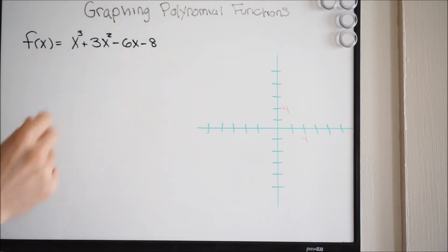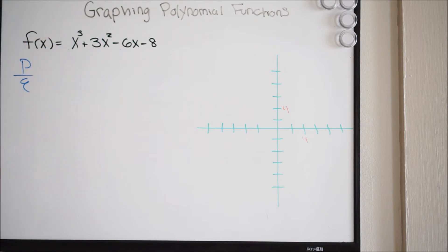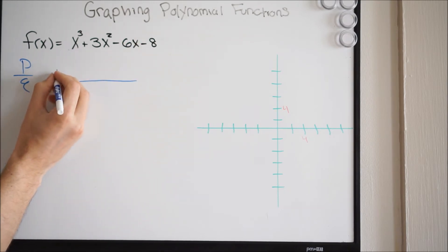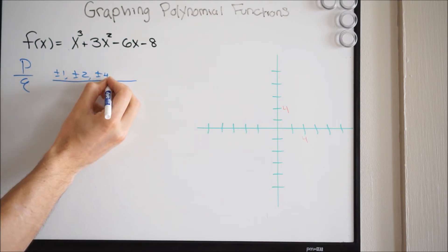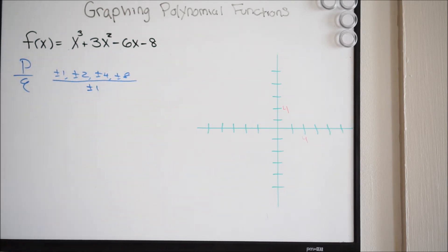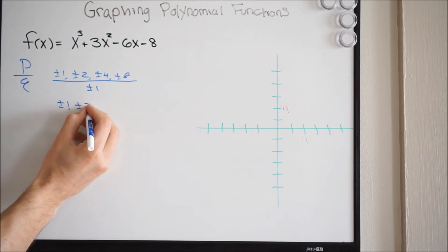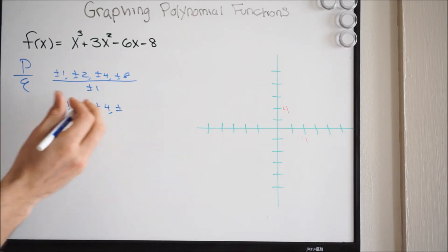Remember the rational root theorem is simply just p over q, where p is my constant and q is my leading coefficient. We're just going to get factors of both of these. So some factors of negative 8 are going to be plus or minus 1, plus or minus 2, plus or minus 4, or plus or minus 8. And then my leading coefficient is plus or minus 1. We're going to go ahead and divide these out — so we'll get plus or minus 1, plus or minus 2, plus or minus 4, and plus or minus 8.